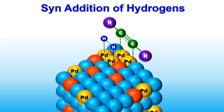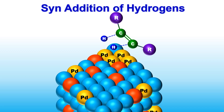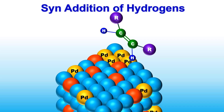Now the syn addition of hydrogen takes place. Both the hydrogen atoms are added to the same side of the triple bond. Remember that only cis alkenes are formed in metal-catalyzed hydrogenation reactions. Trans alkenes are not observed. Hence, this is said to be a stereospecific reaction.